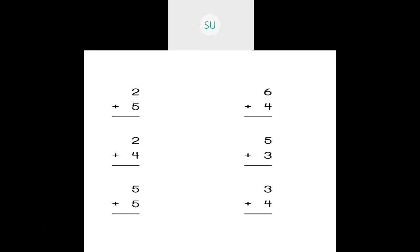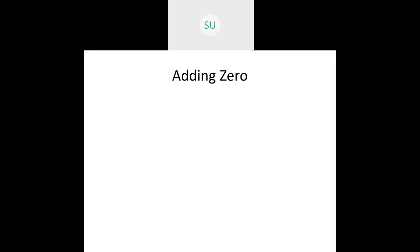So we saw various examples on addition by tally marks. Then we saw what is adding 0. So what happens when you add 0 to a number? Whenever you add 0 to any number you get the answer as the number itself, because 0 means nothing. So whenever you are adding nothing to any number, you will get the answer as the number itself.